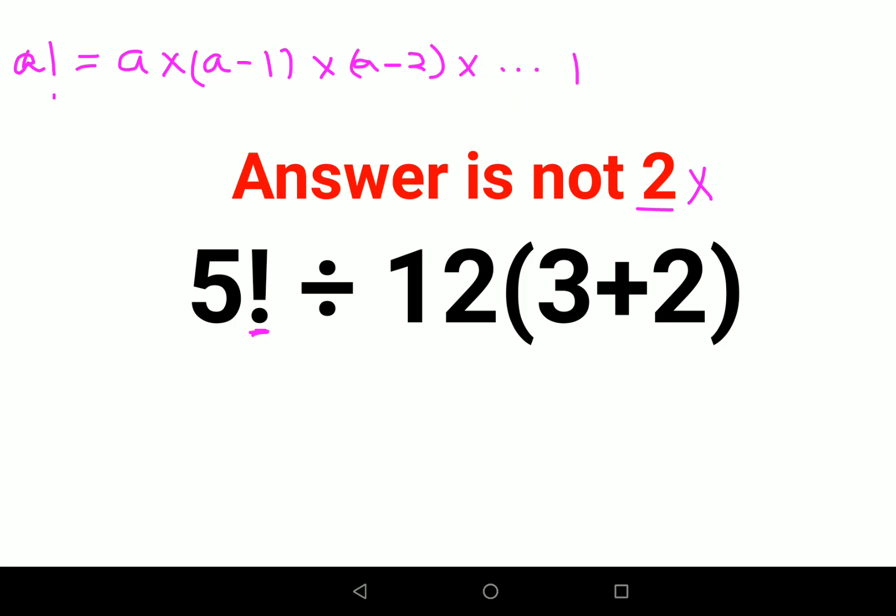So five factorial will be 5 × 4 × 3 × 2 × 1. So now 5 × 4 is 20, 20 × 3 is 60, 60 × 2 is 120. So here, now let's change this question.